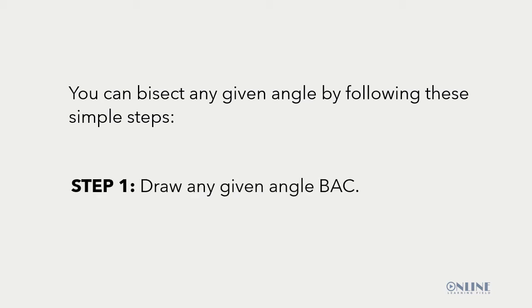Step 1: Draw any given angle BAC. Okay, we go to the board and draw line AB first. We've drawn line AB and we have labelled line AB accordingly.